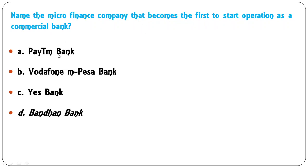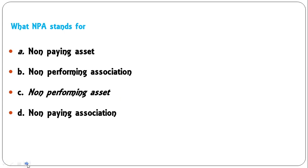Name the microfinance company that became the first to start operation as a commercial bank. Options: Paytm Bank, Vodafone M-Pesa Bank, Yes Bank, Bandhan Bank. It is Bandhan Bank, which started as a microfinance company in Kolkata and later got a license to operate as a commercial bank. D is the correct answer. NPA stands for non-performing asset. C is the correct answer.